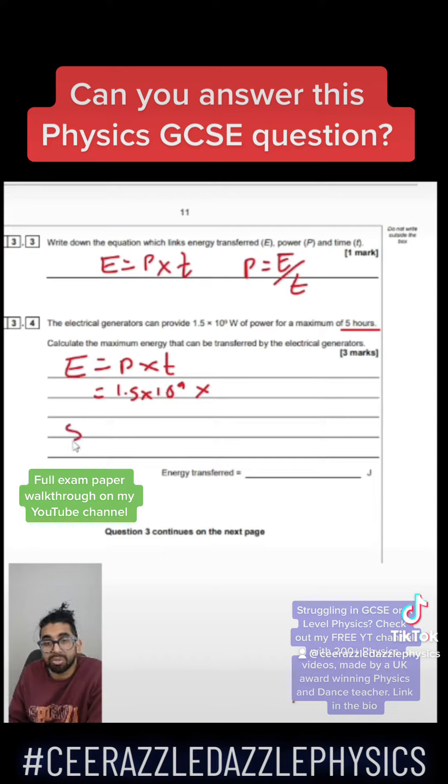So therefore, in 5 hours, if I have 5 hours, that's going to be equal to 5 times by 60, the total number of minutes times by 60 again, that's the total amount of seconds. So therefore, we've got 18,000 seconds over here.